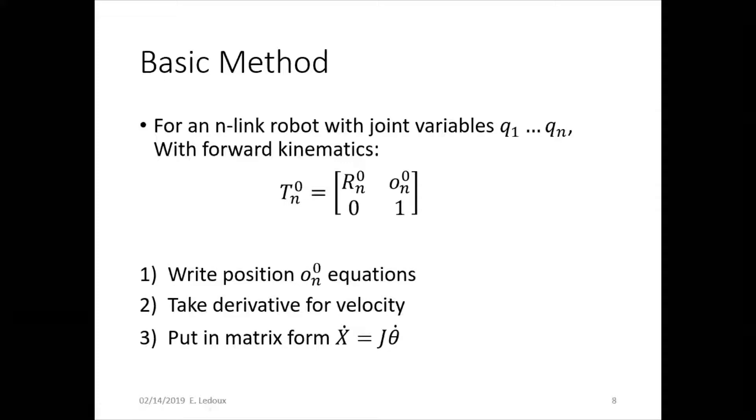This video will explain the basic method of how to calculate the Jacobian for a simple robot. For an n-link robot with joint variables q1 to qn and following forward kinematics, we need to be able to find the Jacobian.